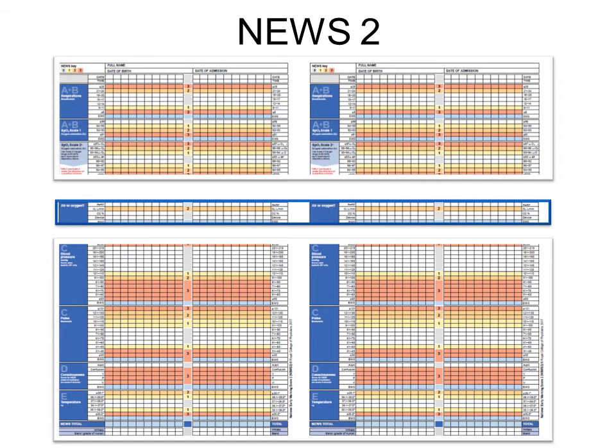With regards to oxygen therapy, the way we score inspired oxygen has also changed. On the old National Early Warning Score, you did not score until you administered more than 2 litres of oxygen, and then you would score varying scores dependent on how much oxygen you were administering. With NEWS2, you don't score if the patient is on room air; otherwise you score 2 for all inspired oxygen, regardless of how much.